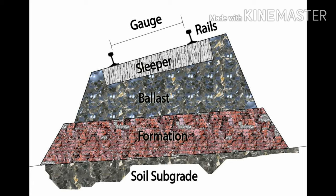The component parts of a permanent way or railway track are: first, rails; second, sleepers; third, ballast; fourth, sub-ballast; fifth, embankment. As we can see in the figure, railways have different parts — rails at the top, below that sleepers, then ballast (known as kapchi), then sub-ballast which consists of fine aggregates, then formation, and finally the soil subgrade at the bottom.